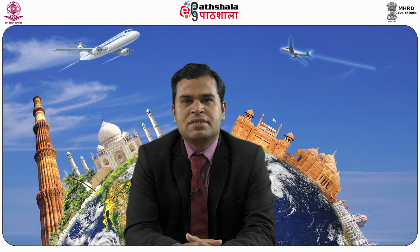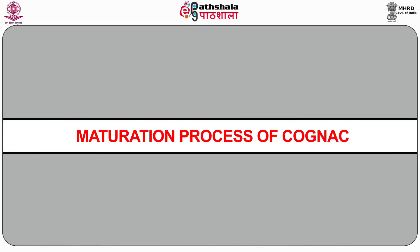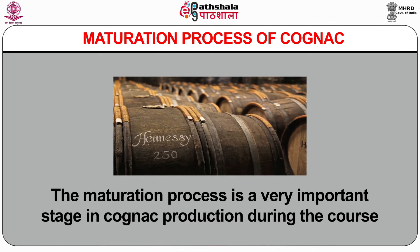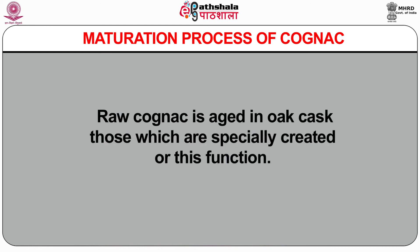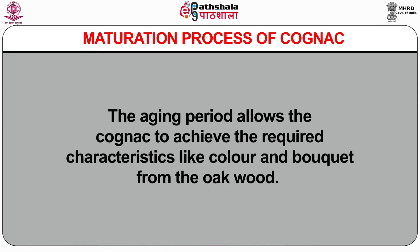The heart, or middle part, is the required fraction — a clear, colourless liquid also known as young Cognac, with about seventy percent alcoholic content. The maturation process is a very important stage in Cognac production. The raw Cognac is aged in oak casks specially created for this function. The ageing period allows the Cognac to achieve the required characteristics like colour and bouquet from the oak wood.